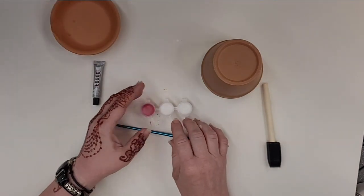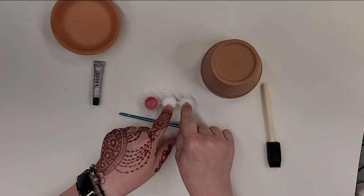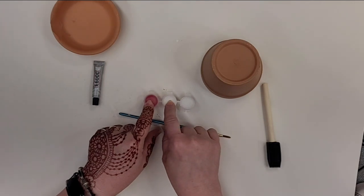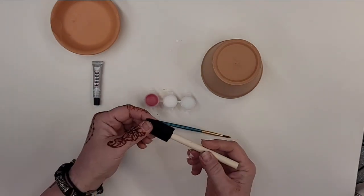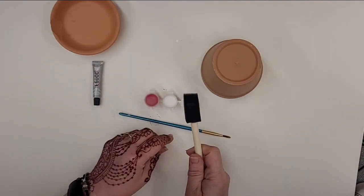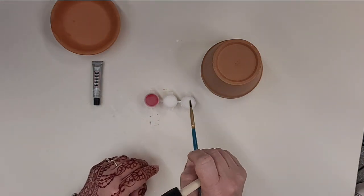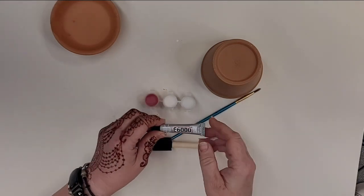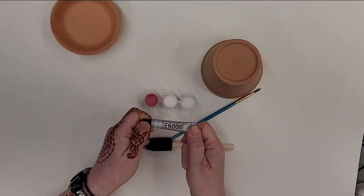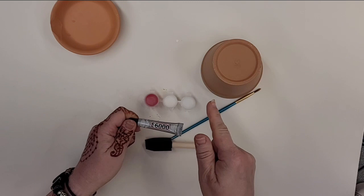You'll also get some paint. This is just regular acrylic paint. You'll get two whites and a red. You'll get a foam brush to cover the big areas, a small brush to paint on the spots, and a small tube of E6000 glue to glue the two pieces together.